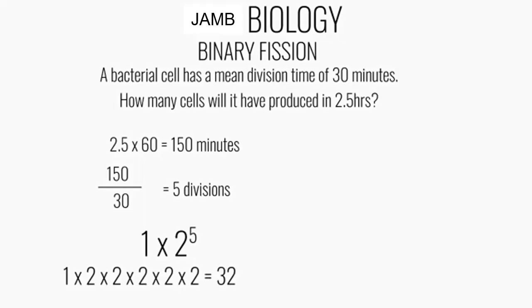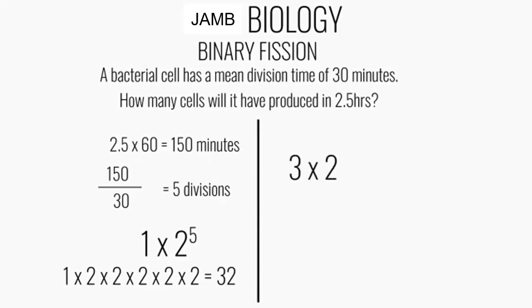If we have more than one bacterial cell, we need to take into consideration the starting number of cells. For instance, if we start with three bacterial cells, we first multiply three by two, and then raise two to the power of the number of divisions.